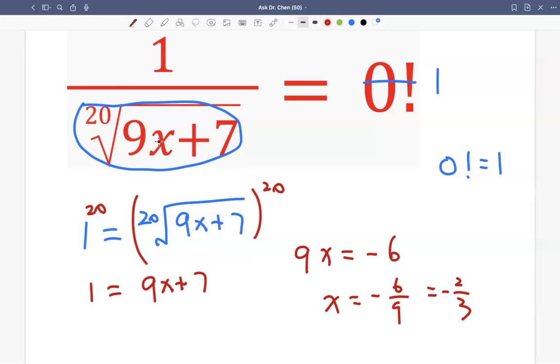And that's it. Let's check the answer. So 9 times negative 2 over 3. 9 divided by 3, that's 3. 3 times negative 2, that's negative 6. Negative 6 plus 7, which is 1. The 20th root of 1 is still 1. 1 divided by 1 is still 1.